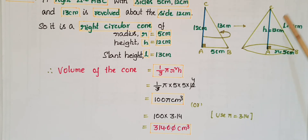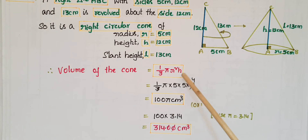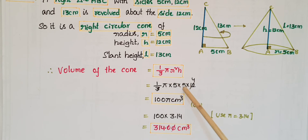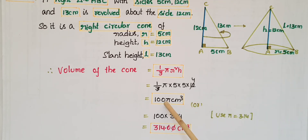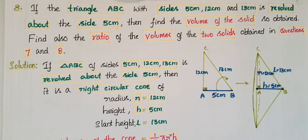Now we have to find the volume of the solid so obtained, which is the right circular cone. Volume equals one-third π r² h, that is one-third π into 5 into 5 into 12. Simplifying: 3 fours are 12, 5 fives are 25, 25 into 4 is 100. So the volume is 100π centimeter cube, or using π as 3.14, that equals 314 centimeter cube.